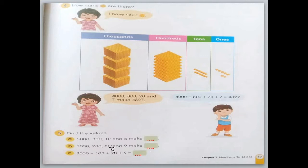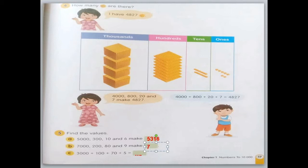Now let's find the values. 5,300, 10, and 6 — you just put the number directly: 5,300 on the thousands and hundreds, on the tens you have 1, and on the ones you have 6. Next, 7,280 and 9 — write down 7 on the thousands, 2 on the hundreds, 8 on the tens, and 9 on the ones.